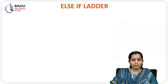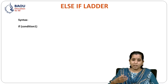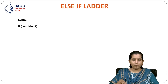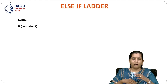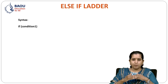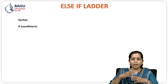Now let's see ELSE IF ladder. ELSE IF ladder is an extension of IF ELSE condition, that is nested IF ELSE condition, and that's why it is known as ELSE IF ladder. If we have more than one nested IF, then it can be easily framed like an IF ELSE ladder, which is very easy for writing. Otherwise, too many nested IFs will create confusion for a programmer and the code will not be easily readable.